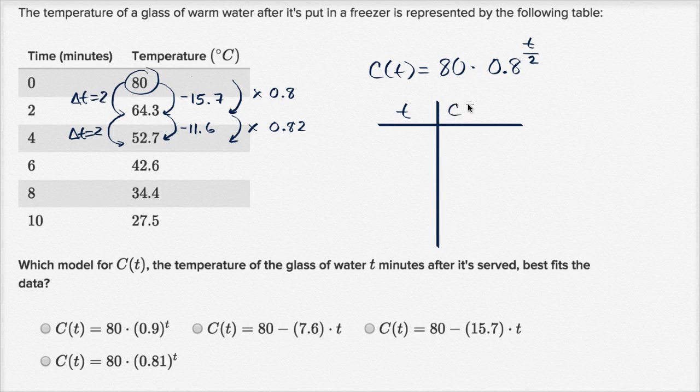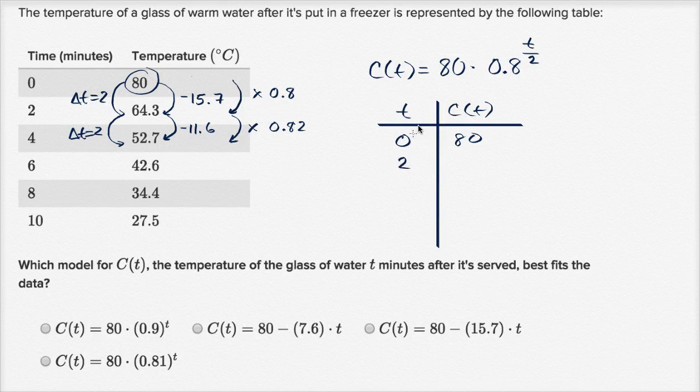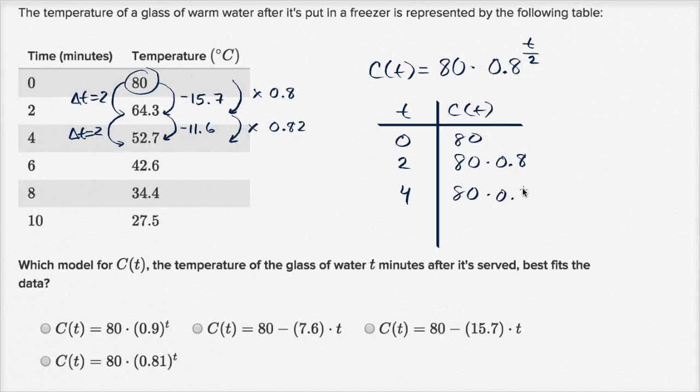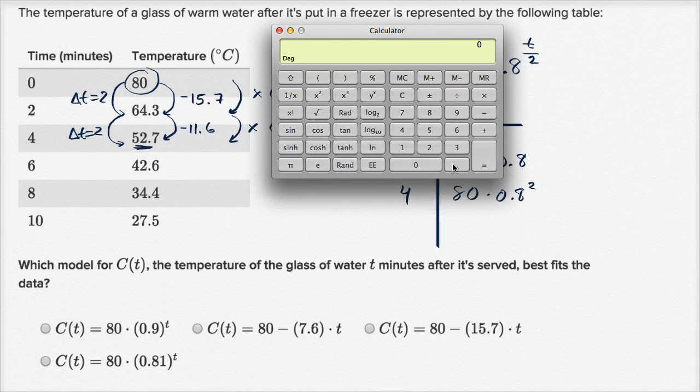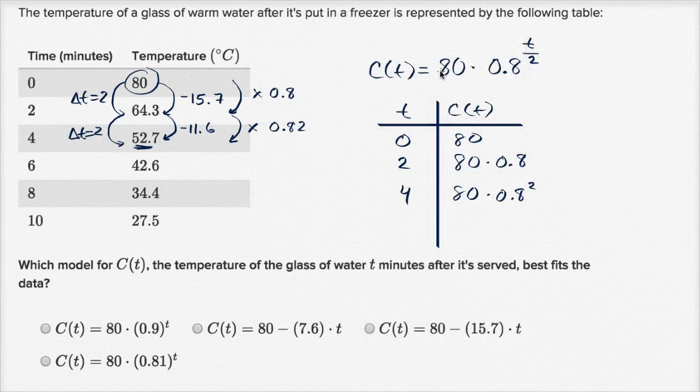So, T and C of T. When T is zero, C of T is 80. When T is two, we have 80 times 0.8, which is pretty close to what we have over here. When T is four, it would be 80 times 0.8 squared, which is pretty close to what we have right over here. If I have 0.8 squared times 80, it's 51.2, getting pretty close. This is a pretty good approximation, pretty good model. So I'm liking this model.